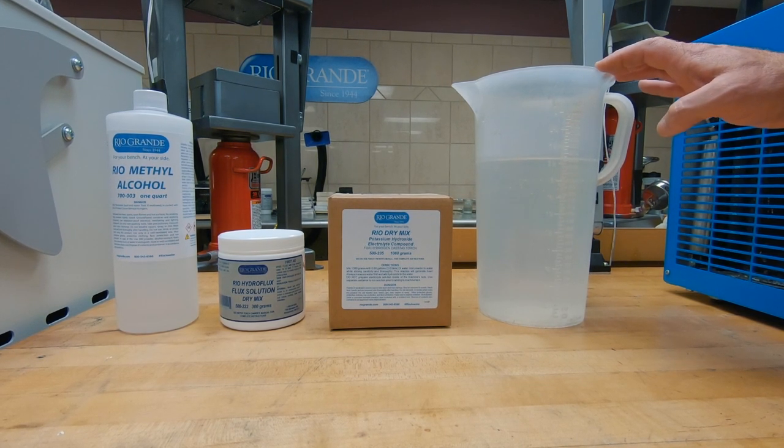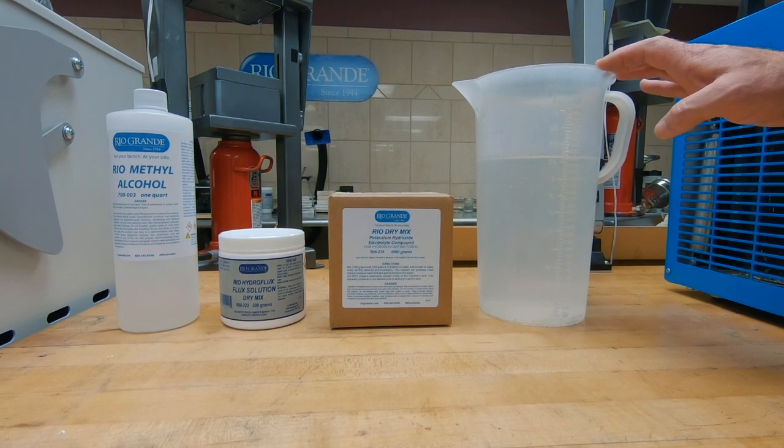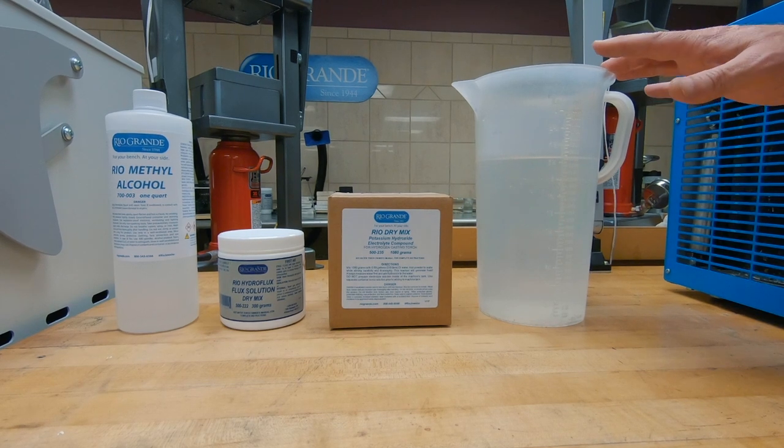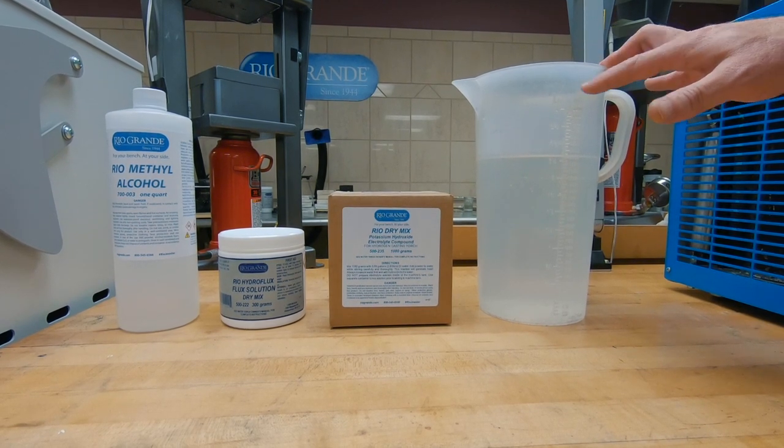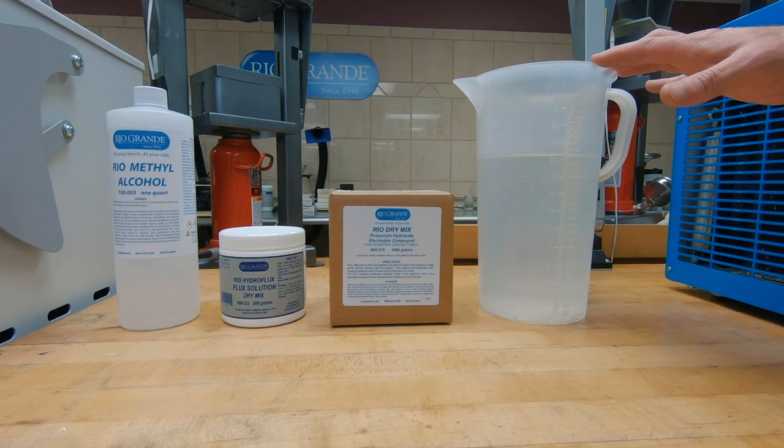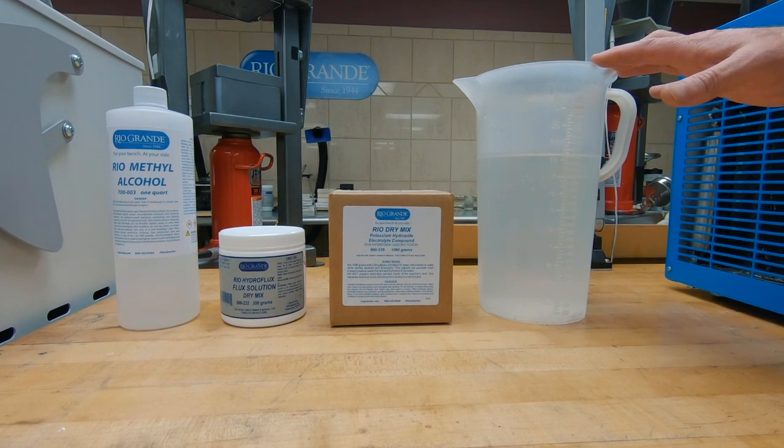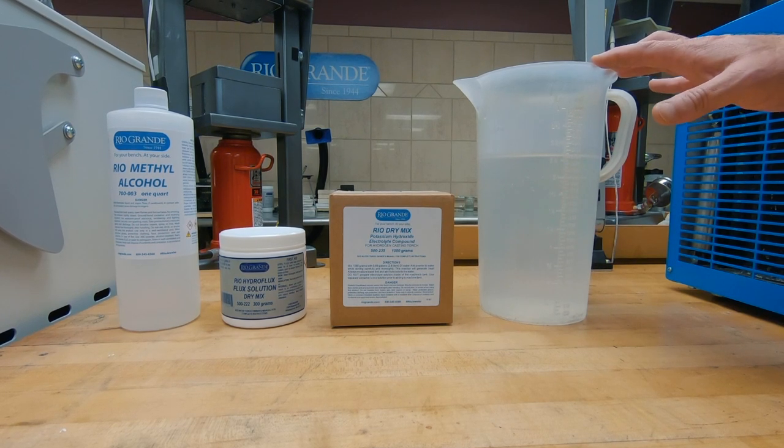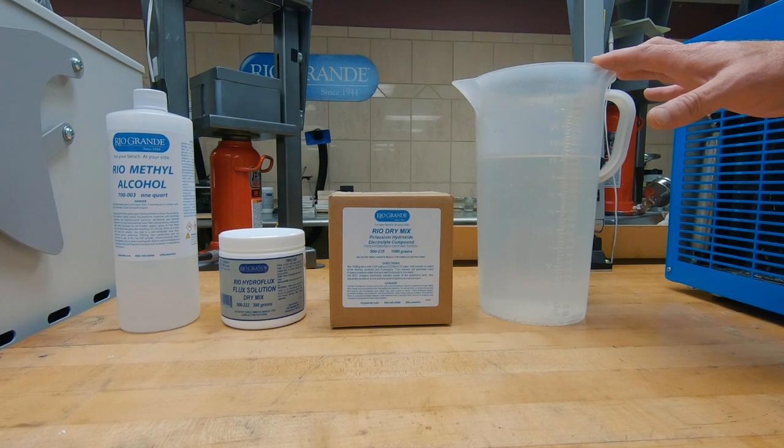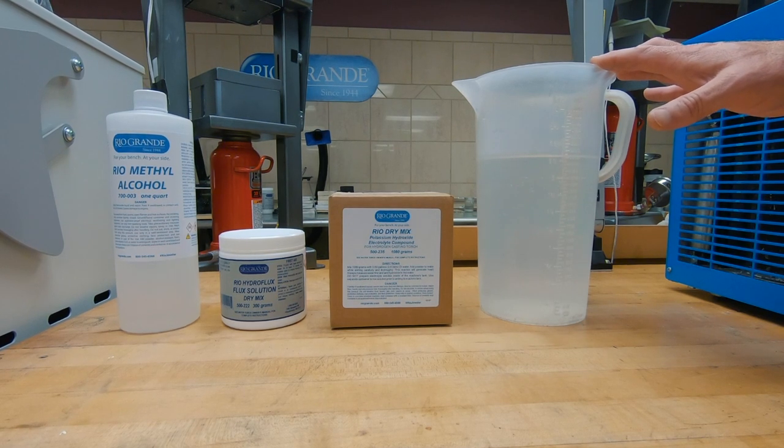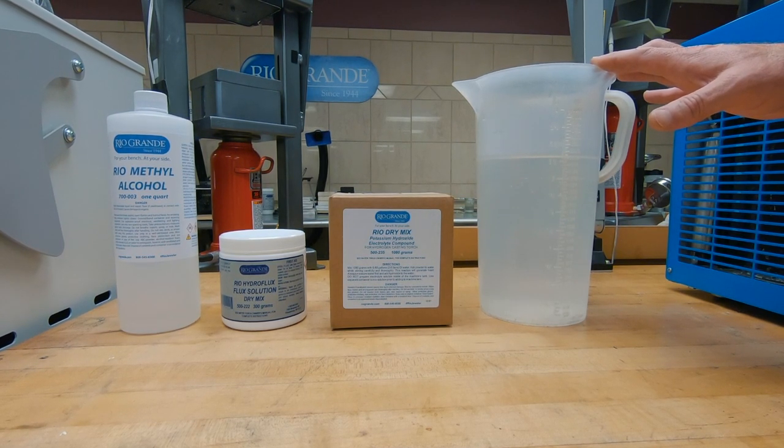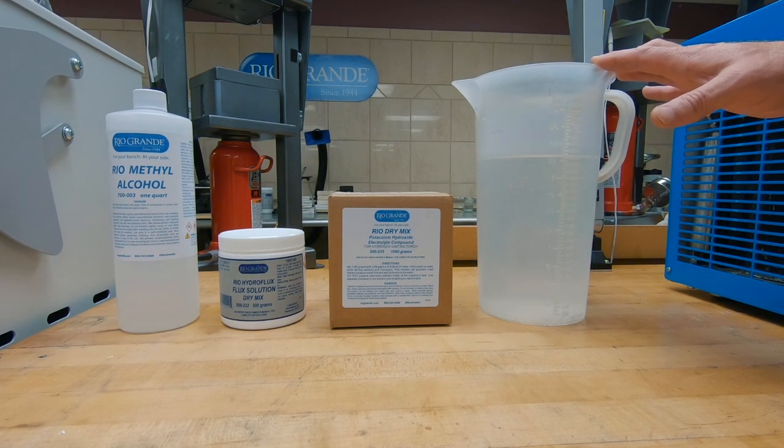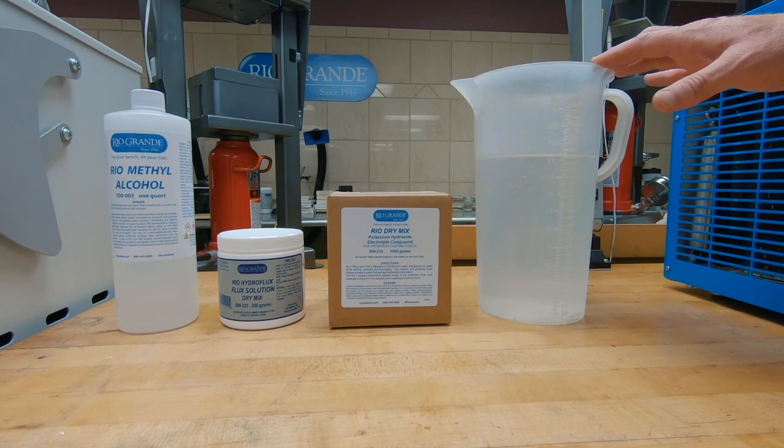Another thing that you want to have on hand is vinegar. Vinegar is actually a neutralizer to the caustic solution, the potassium hydroxide. So if you do spill it, you can use vinegar to clean it up. If you get it on your hands, so on and so forth, use vinegar to actually neutralize the solution. So I'm going to go ahead and mix this up off camera. It's going to take probably an hour for the solution to come down to a point that it's cool enough to actually put into the machine.